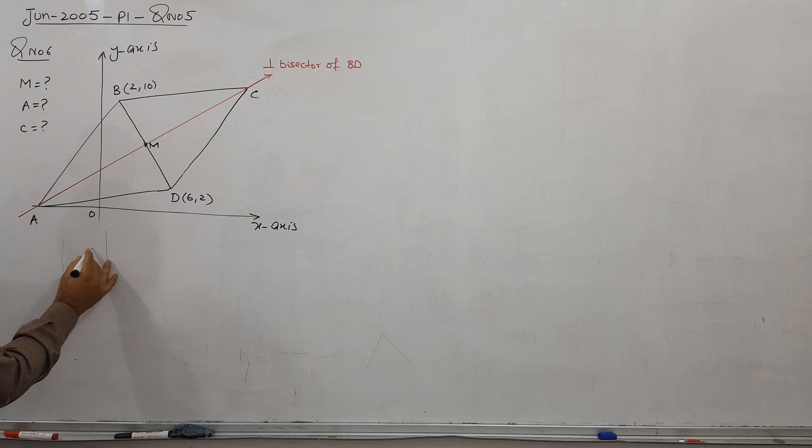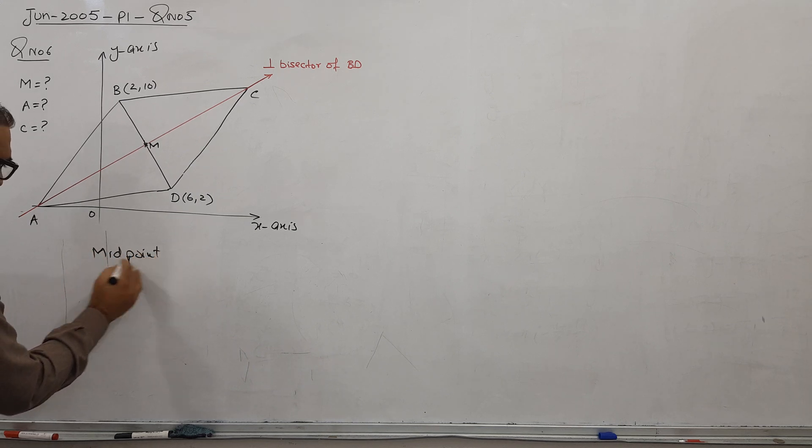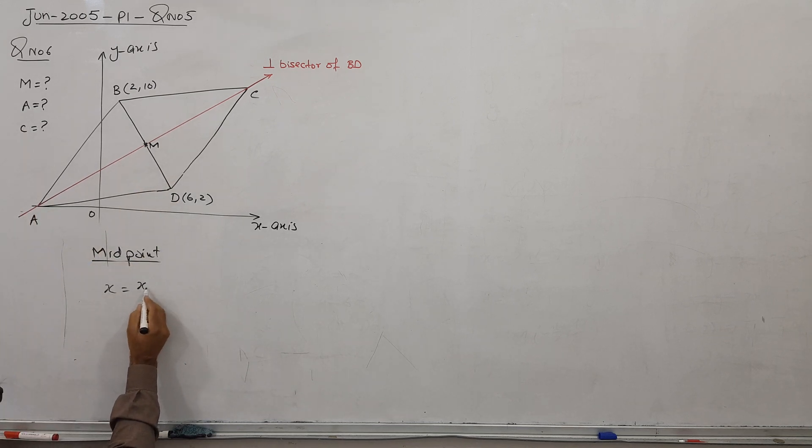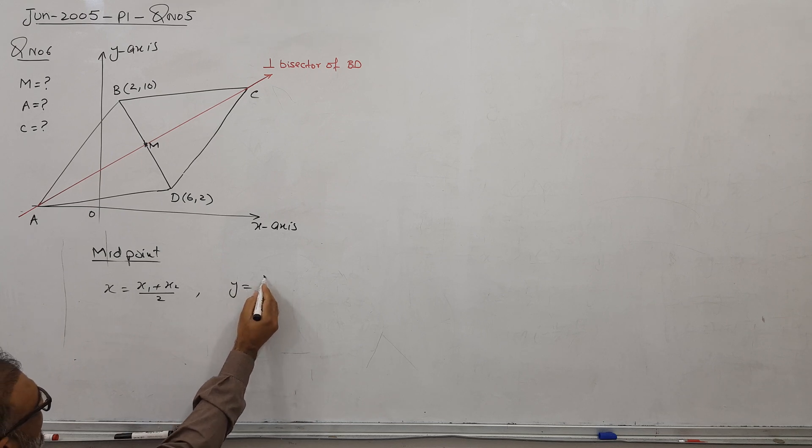So M coordinate, how do I find the midpoint M? So formula, you know, all of you know, average, like X1 plus X2 divided by 2. Similarly, Y1 plus Y2 divided by 2.